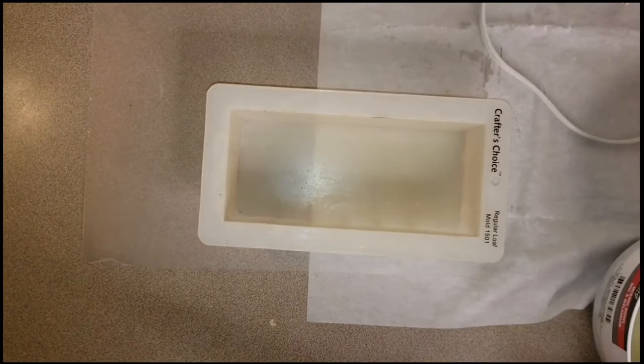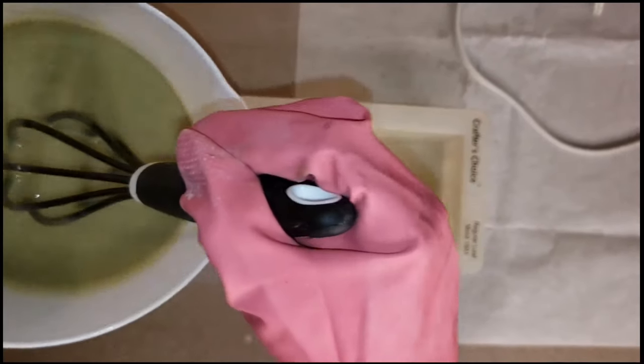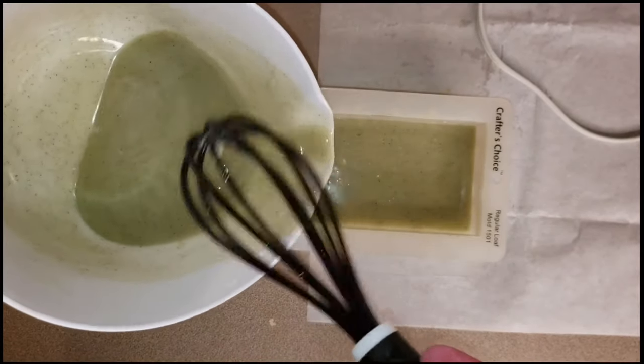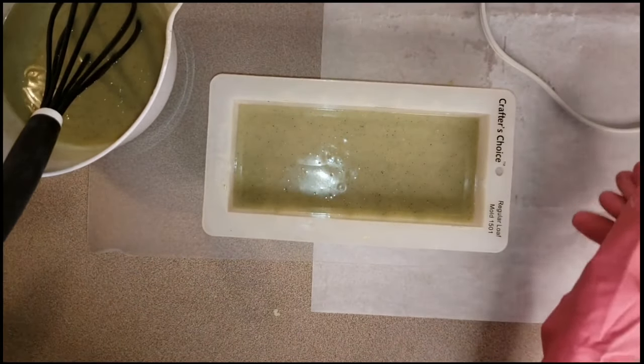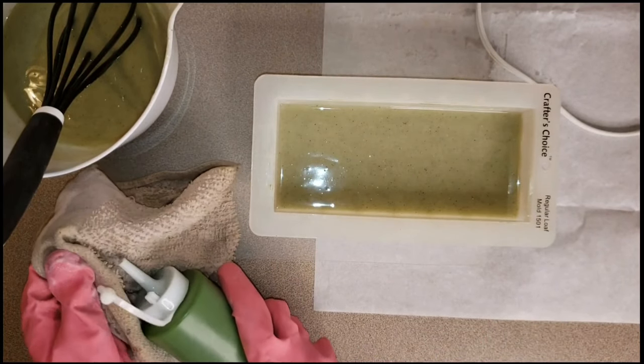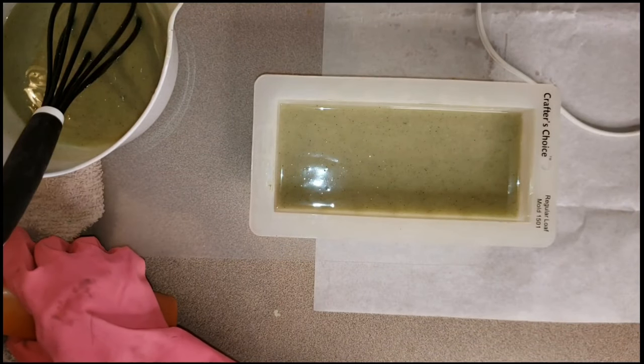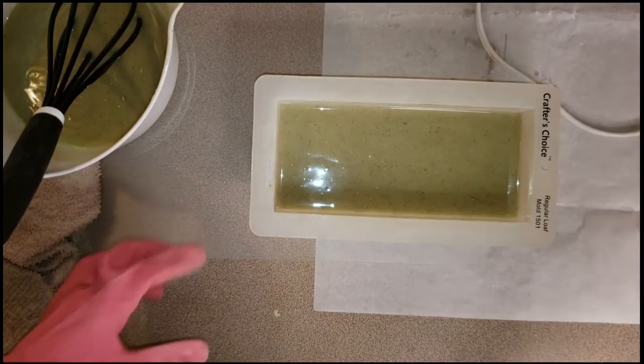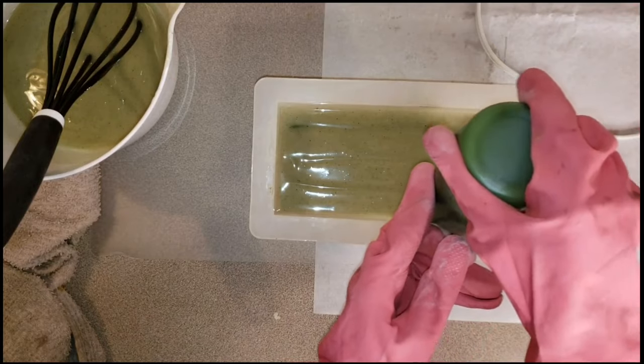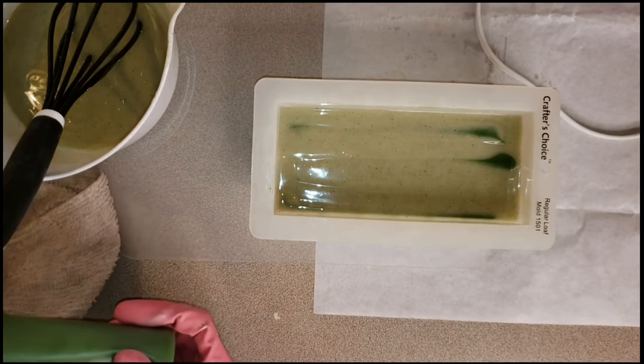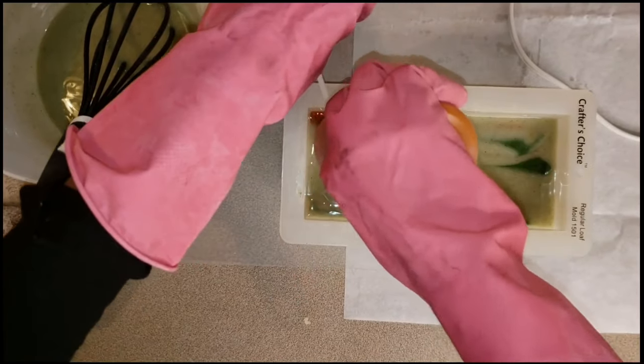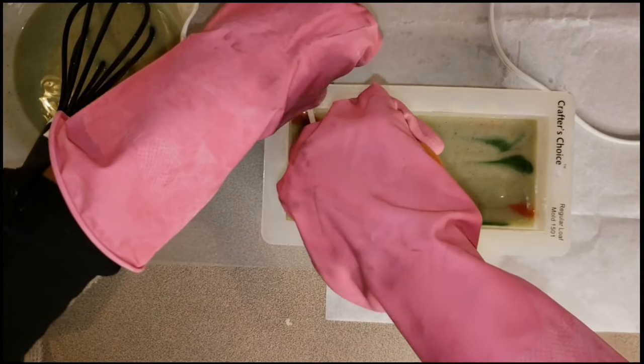Get your mold ready and pour a good amount of your green zeolite clay mixture, about half of your mold. Take the bottles of colors and be careful while you open them so they do not splash into your eyes. Make little drops of each color horizontally from one side to the other. You can use different colors for this.